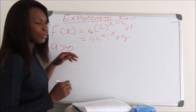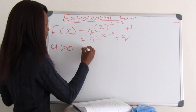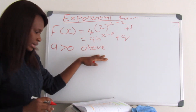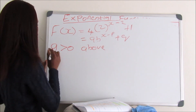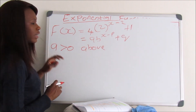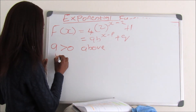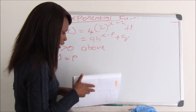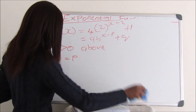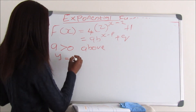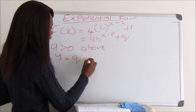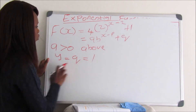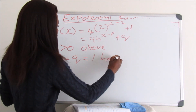The next thing we must do is find the horizontal asymptote, which is Y equals Q. From the equation we are given, Q equals 1, so our horizontal asymptote is Y equals 1.